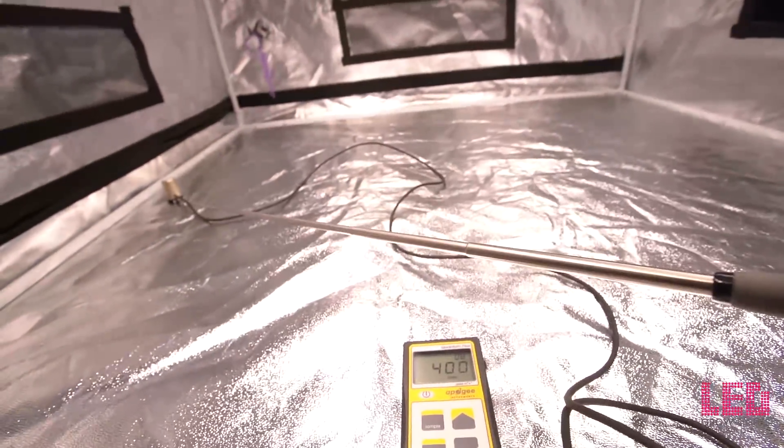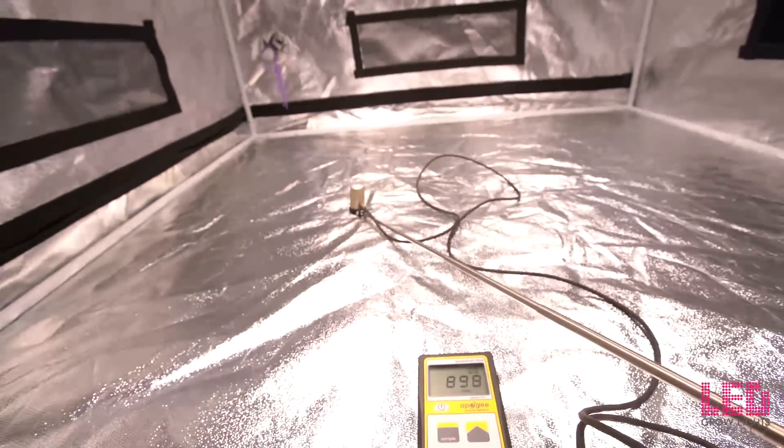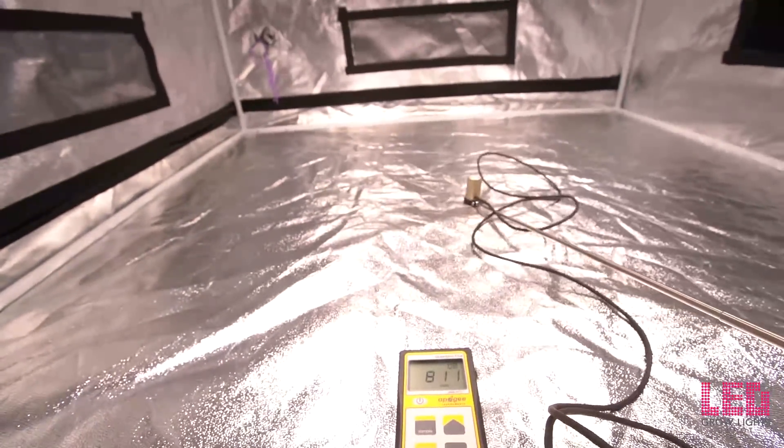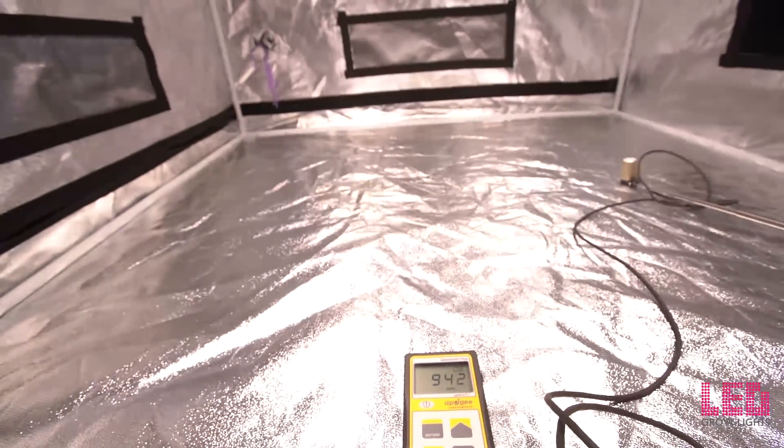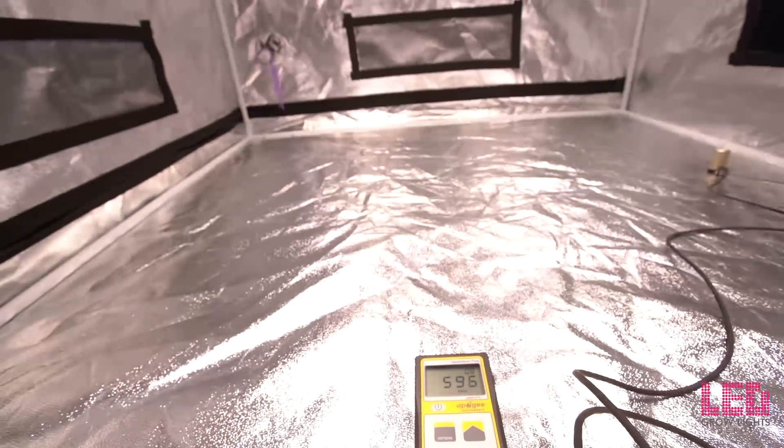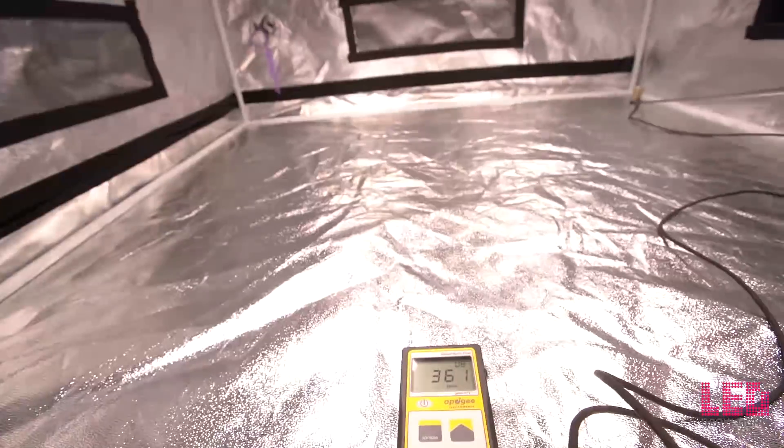Notice how that PPFD climbs really fast as you start moving in towards the center and then move to the other side. It stays right around 800-900 plus for most of the width of the tent. It's just in the extreme corners and extreme edges where you get lower PPFD, and those numbers are still pretty good in the corners and edges compared to other LED grow lights.